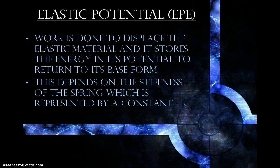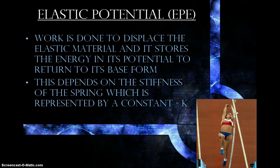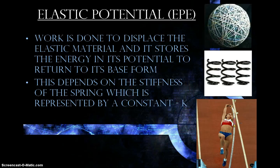The last kind is called elastic potential energy, which involves elastic materials. Some different types include a pole vault, springs or slinkies, rubber balls or trampolines — anything that has an elastic property.